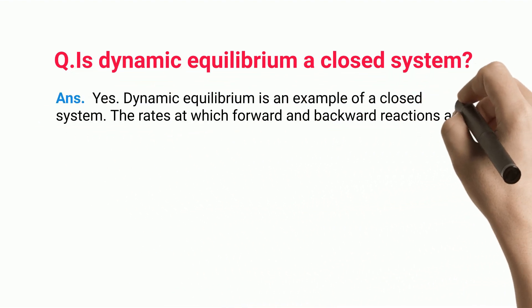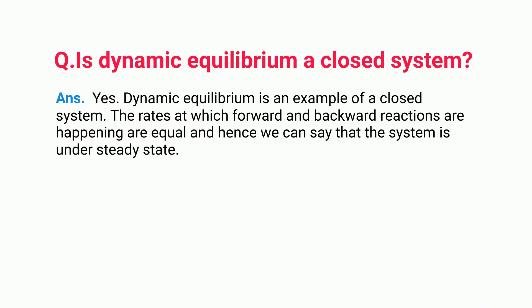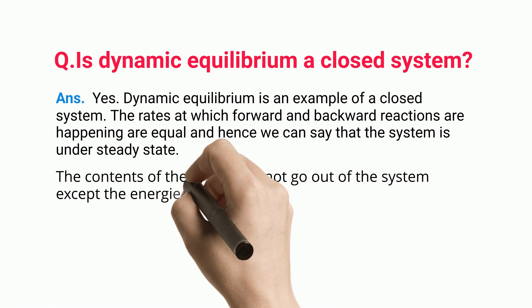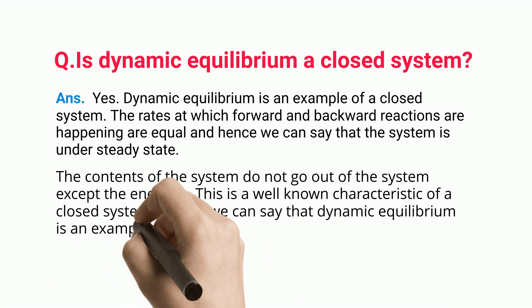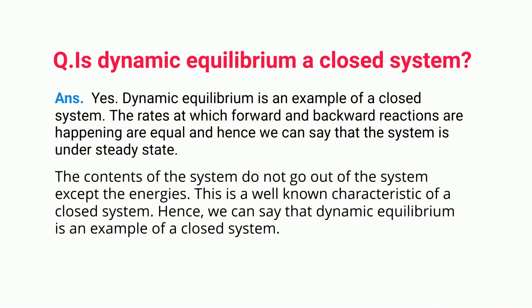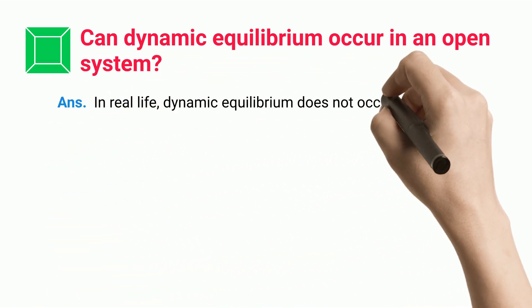Is dynamic equilibrium a closed system? Yes, dynamic equilibrium is an example of a closed system. The rates at which forward and backward reactions are happening are equal, and hence we can say that the system is under a steady state. The contents of the system do not go out of the system, except energy — a well-known characteristic of a closed system.